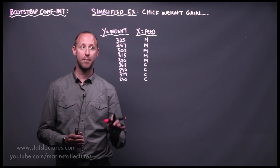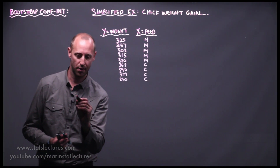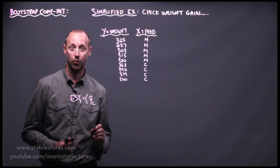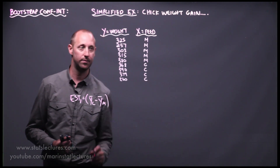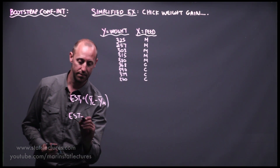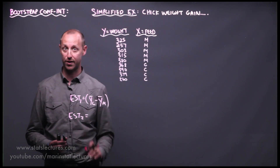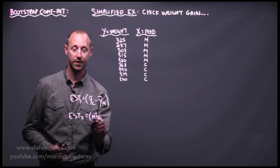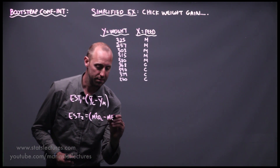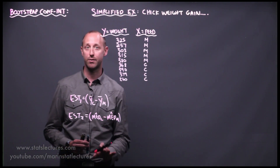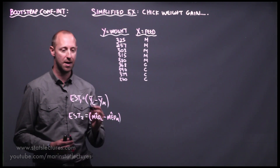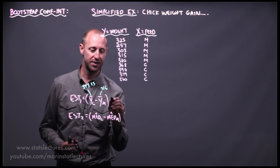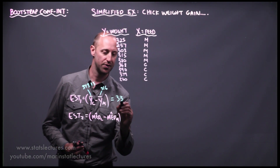In this video we're going to compare two different estimates. Estimate one is the difference in the mean weight for casein minus the mean for meat meal. Working this out, the mean for casein is 349.25 and the mean for meat meal is 316, giving a difference in means of 33.25. So the mean for casein is on average 33.25 larger than the mean for meat meal.